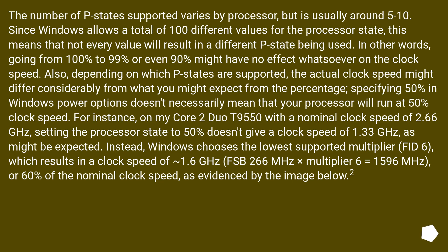Also, depending on which P states are supported, the actual clock speed might differ considerably from what you might expect from the percentage. For instance, specifying 50% in Windows power options doesn't necessarily mean that your processor will run at 50% clock speed. On a Core 2 Duo T9550 with a nominal clock speed of 2.66 GHz, setting the processor state to 50% doesn't give a clock speed of 1.33 GHz as might be expected.